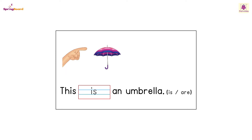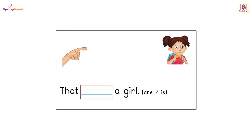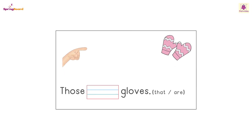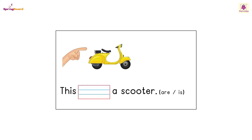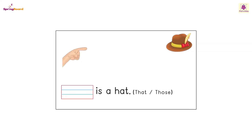...an umbrella. That is a girl. Those are gloves. This is a crow. This is a scooter. That is a...